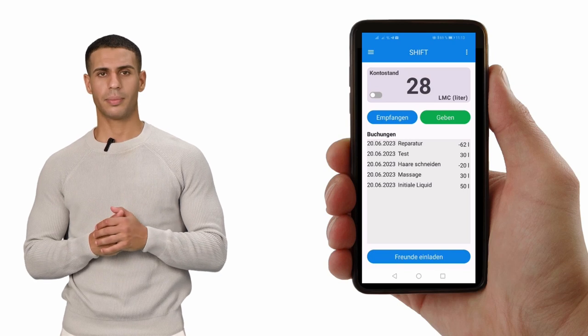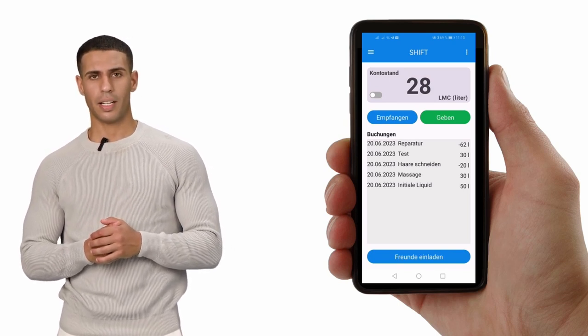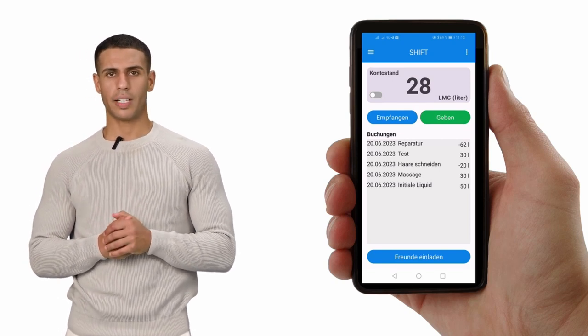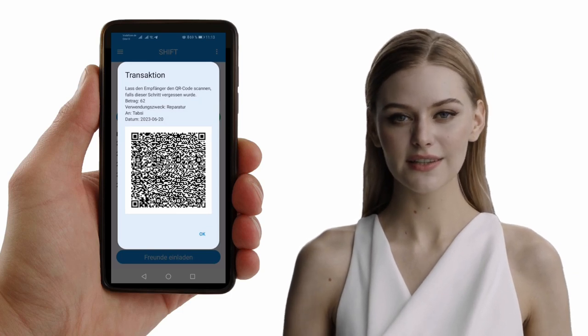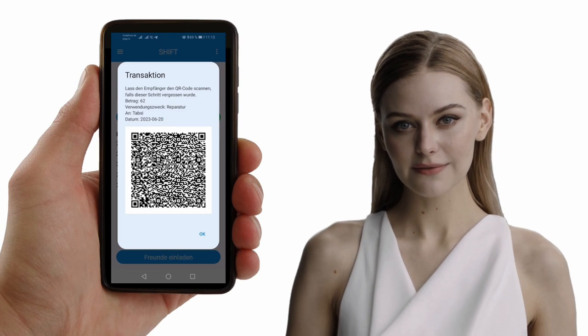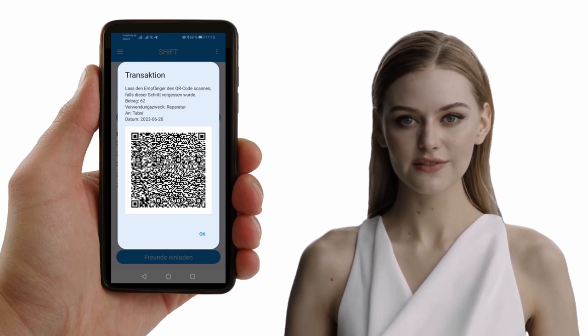Made a mistake? No worries. If the receiver did not scan the agreement, the transaction isn't finalized. But we've got a solution for that. On the giver's main screen, select the transaction with a negative amount and a QR code will appear. The receiver just needs to scan that code to finalize the transaction.